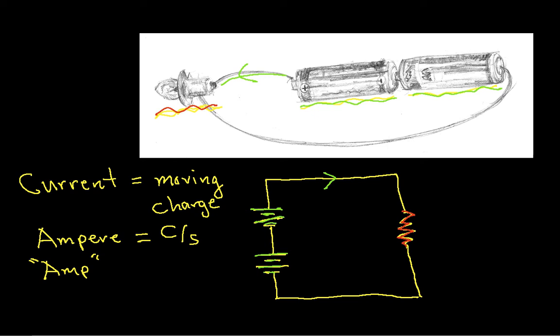We are going to adopt the convention that current is positive charge. So this is going to be moving positive charge. When I draw an arrow like this, and I say current is flowing in the direction of the arrow, it means the positive charge is moving in the direction of the arrow.